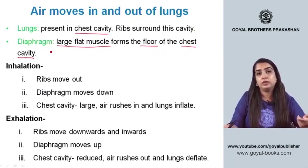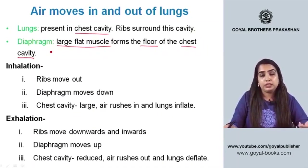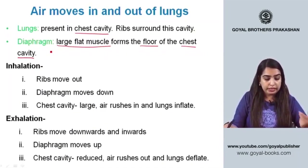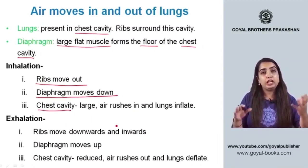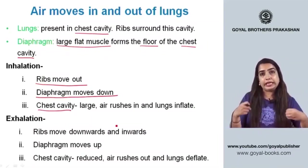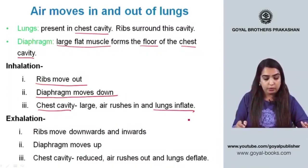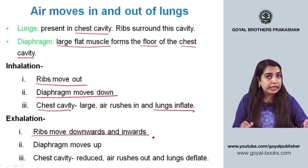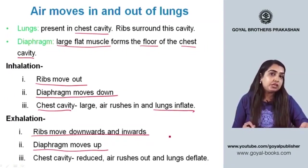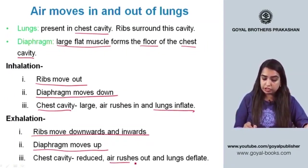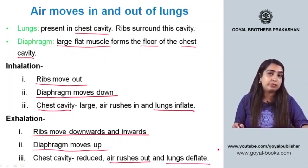To reiterate: during inhalation, the ribs move out, the diaphragm moves down, the chest cavity enlarges, air rushes in, and the lungs inflate. During exhalation, the ribs move downward and inward, the diaphragm moves up, the chest cavity reduces, air rushes out, and the lungs deflate.